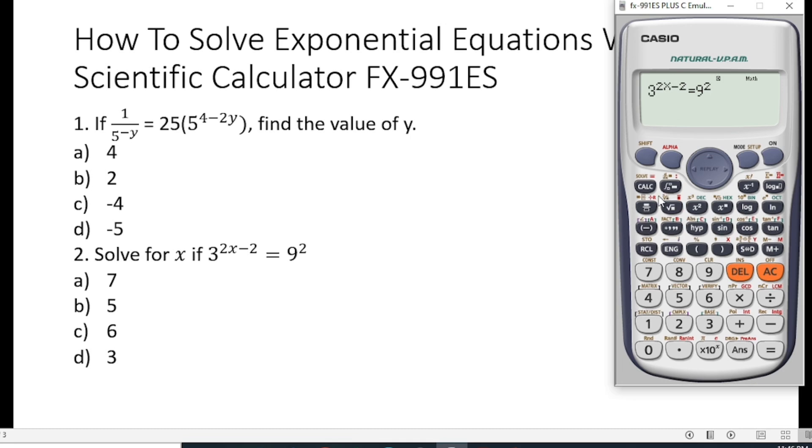So after we are done, we press on shift, then we press equal to, to find our answer. So it has given us x is equal to 3. So we can see that from the options, our answer is d.